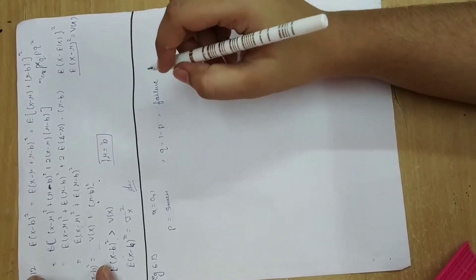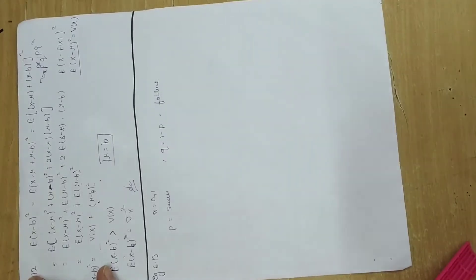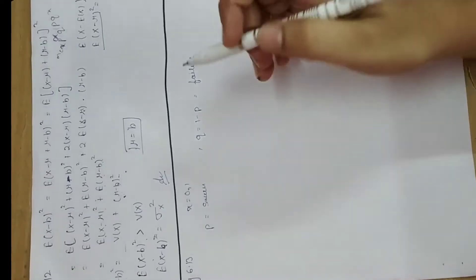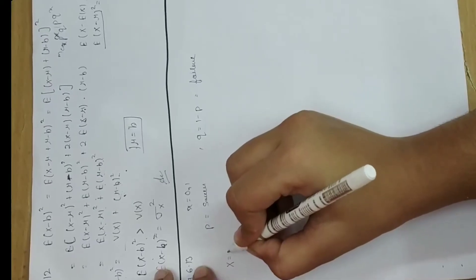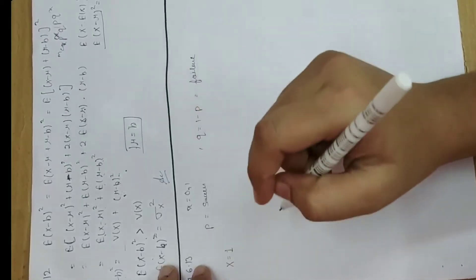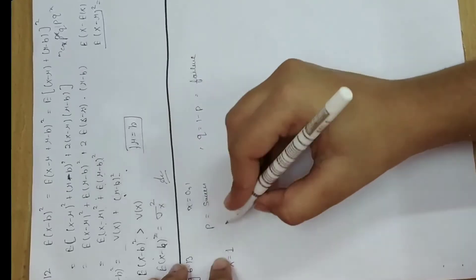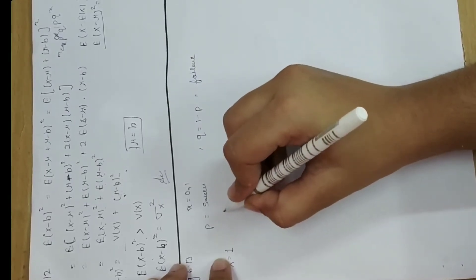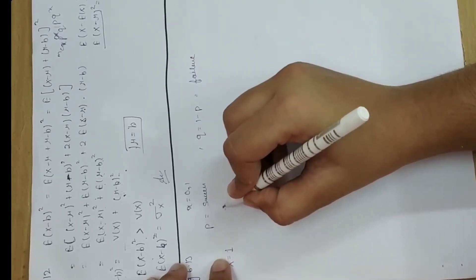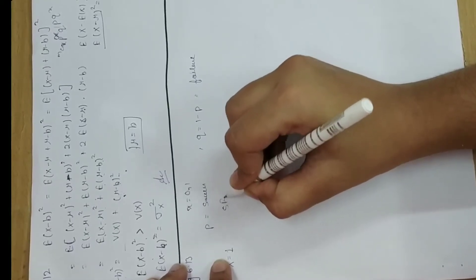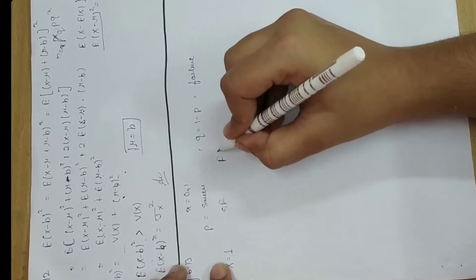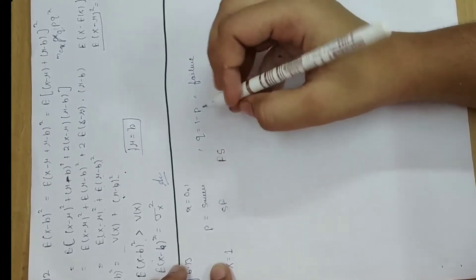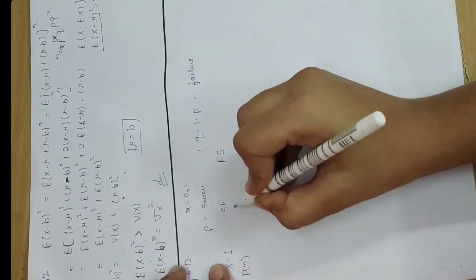Now, what is the Bernoulli trial? If we consider the first attempt, then x value equal to 1 means we get success the first time, or we get failure the first time. If we get failure the first time and success the second time, the run length changes.